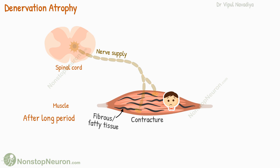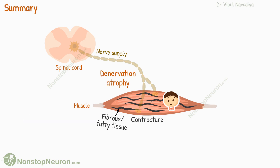In summary, denervation atrophy occurs when a muscle loses its nerve supply, involving a decrease in the size and strength of muscle fibers. In the initial stage, restoration of nerve supply may reverse the atrophy. But if fibrosis starts happening, it cannot be reversed.